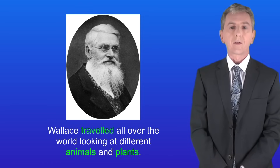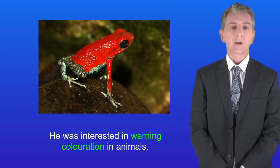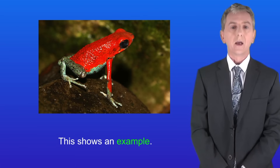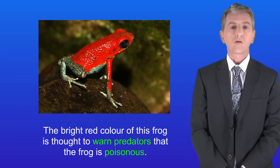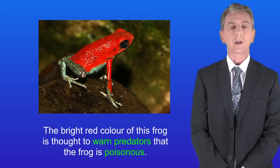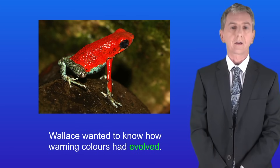Wallace travelled all over the world looking at different animals and plants. He was interested in warning colouration in animals. The bright red colour of this frog is thought to warn predators that the frog is poisonous. Wallace wanted to know how warning colours had evolved.